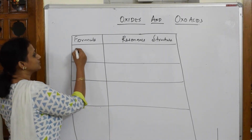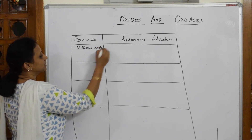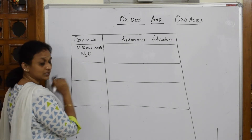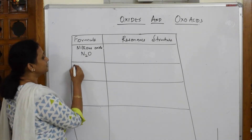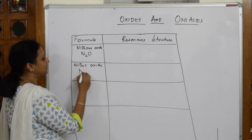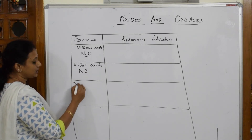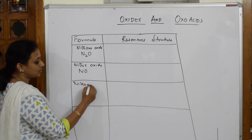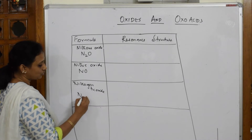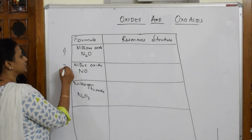When speaking about oxides of nitrogen, the first oxide is nitrous oxide, N₂O. The second type is nitric oxide, NO. The third one is nitrogen trioxide, N₂O₃.